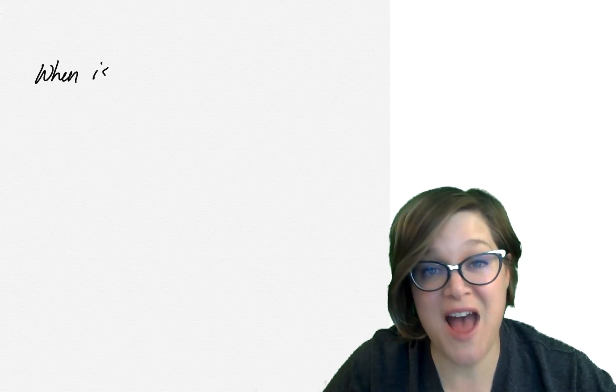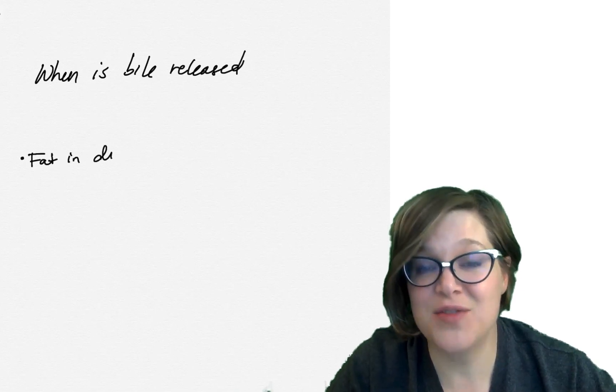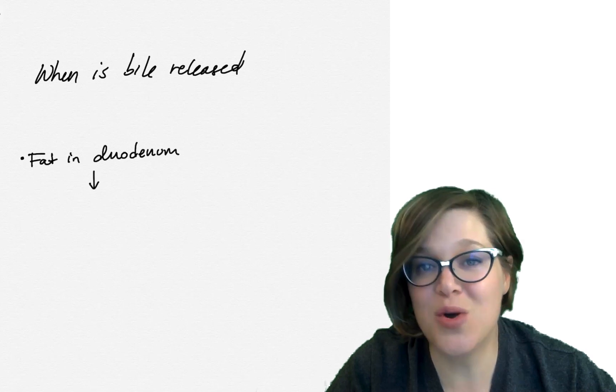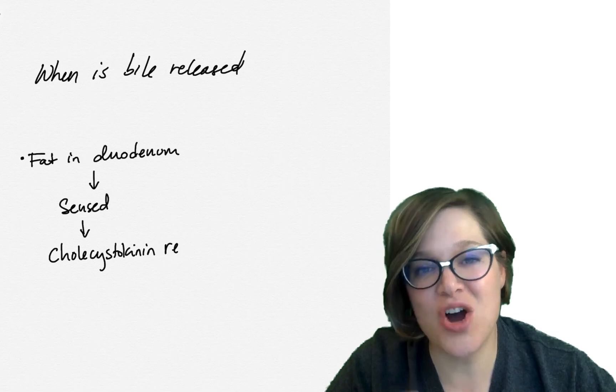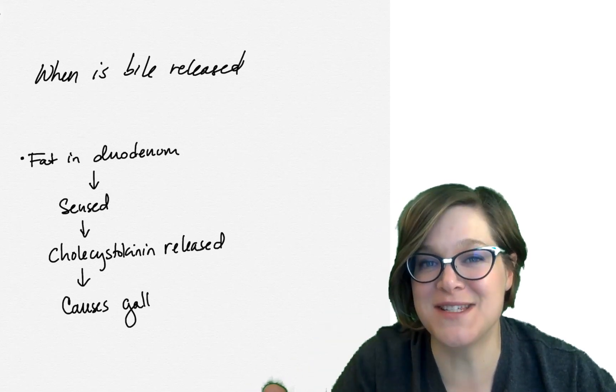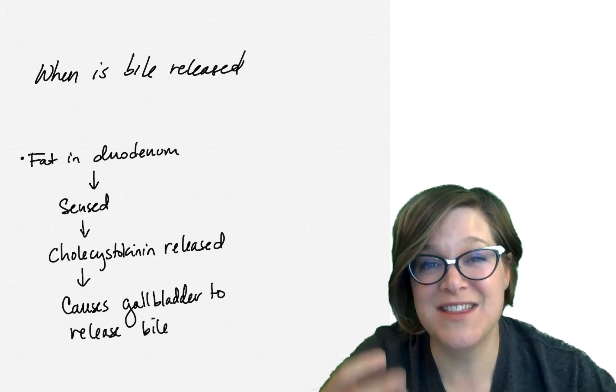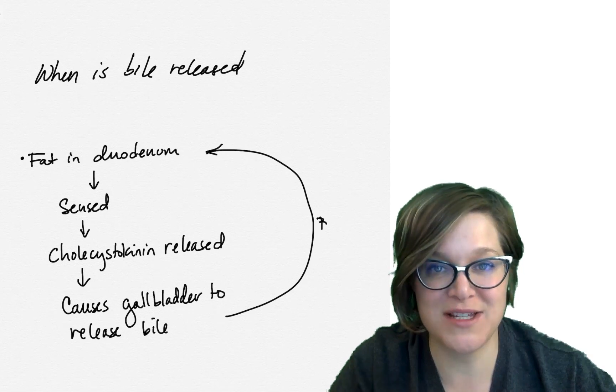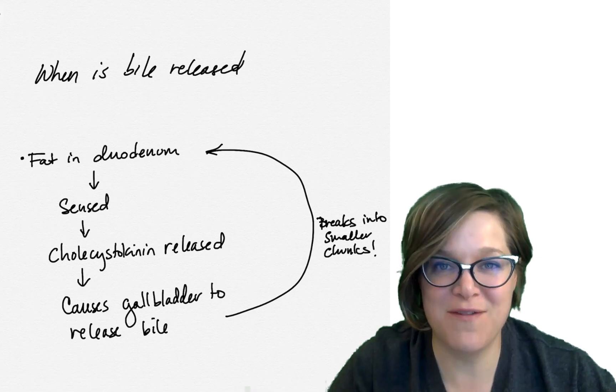So let's talk about what triggers this release of bile from the gallbladder. When there is fat in the duodenum, that is sensed by cells. And those cells release a hormone called cholecystokinin, or you can just call it CCK for short. And CCK causes that gallbladder to contract. So basically, the duodenum is saying, hey, there's fat in here. And the gallbladder is contracting to release the stuff that helps the enzymes digest fat. So you're not releasing it all the time, you're releasing it when you've got fat in your system.